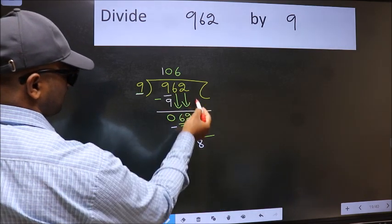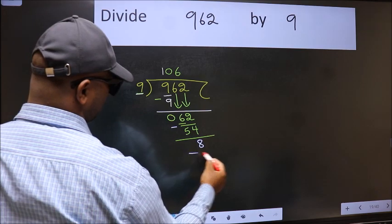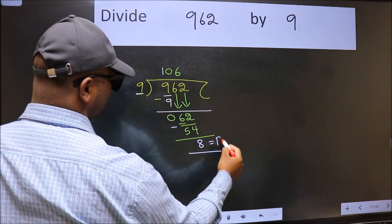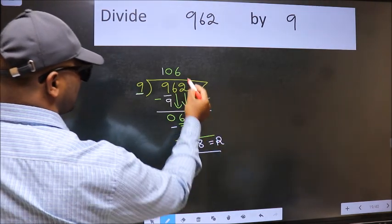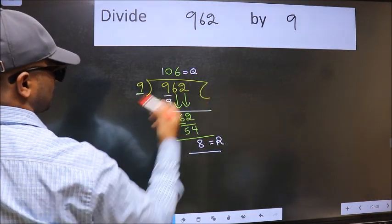No more numbers to bring down, so we stop here. This is our remainder and this is our quotient.